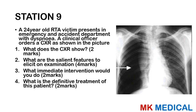Station 9: A 24-year-old RTA victim presents to accident and emergency with dyspnoea. A clinical officer orders a chest x-ray as shown in the picture. What does the chest x-ray show? What are the salient features to elicit on examination? What immediate intervention would you do? What is the definitive treatment?